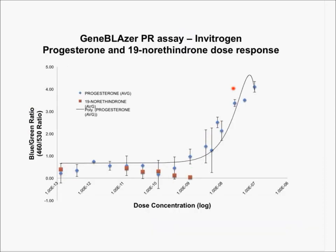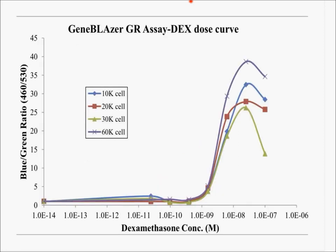For progesterone, the reason we considered dropping levonorgestrel was because we really didn't see much of a response to that compound. What we did see a fairly good response to was progesterone itself — this seems fairly promising, around the 10⁻⁸ region. We'd really like to see things around 10⁻⁹ in terms of what's out there environmentally, so we have to play with the extract. The glucocorticoid receptor — what we traded the thyroid receptor for — is showing fairly sensitive responses in the 10⁻⁹ region. This looks very promising as an indicator, highly correlated with growth and immune function, important for human health and wildlife.